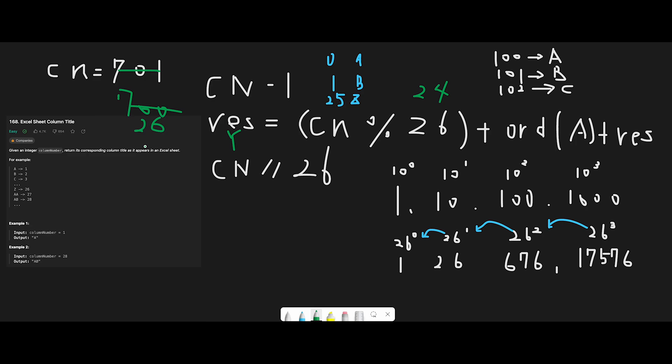And next, 26, and minus one should be 25. So 25 divide by 26 and get the modulo, so that should be 25, right? So 25 should be...